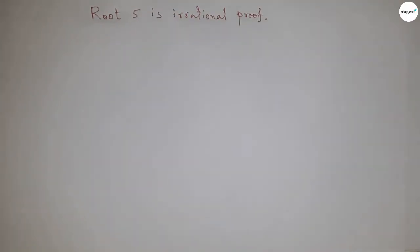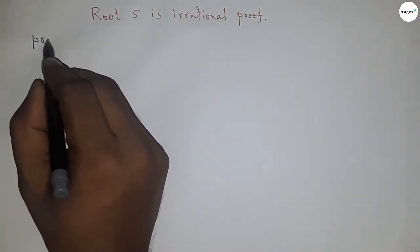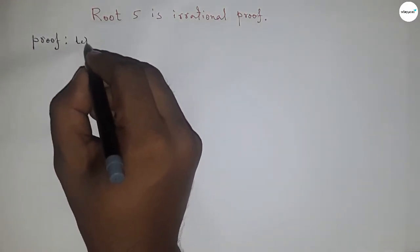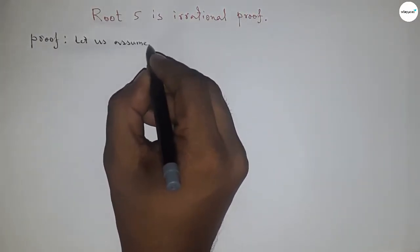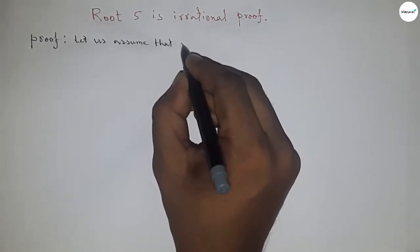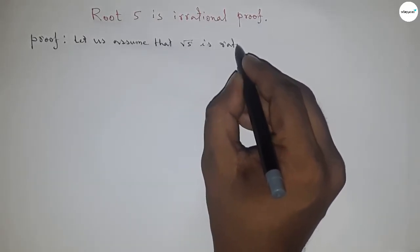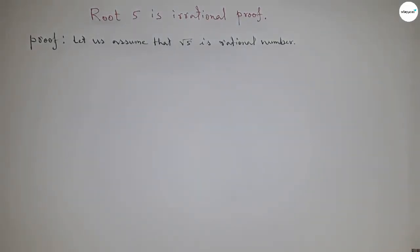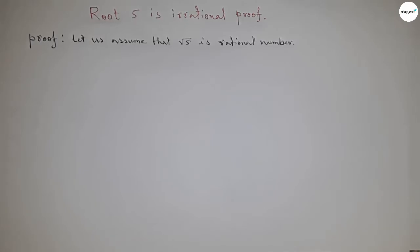Hi everyone, welcome to SSR Classes. Today we have to prove that √5 is an irrational number. I'm going to use the contradiction method to prove that √5 is irrational. So first of all, let us assume that √5 is a rational number — this is our assumption.